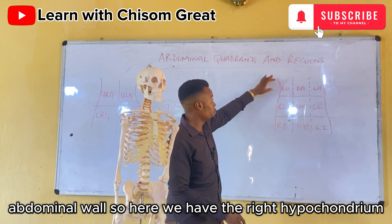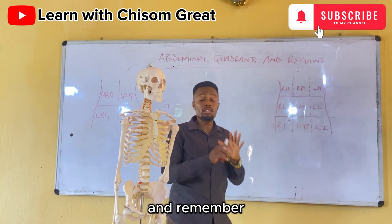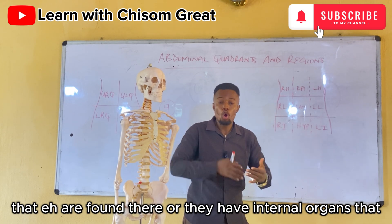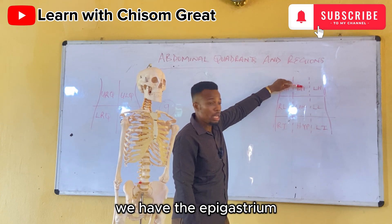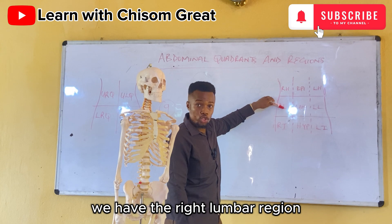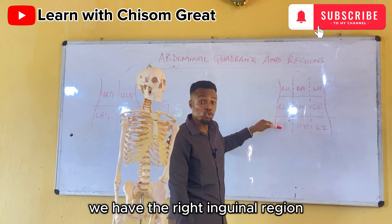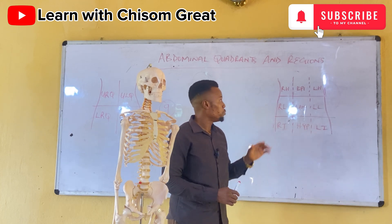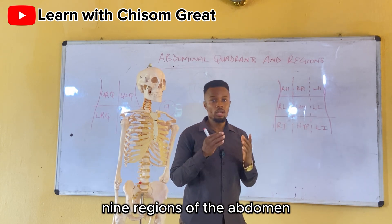The nine regions are: the right hypochondrium, the epigastrium, the left hypochondrium, the right lumbar region, the umbilical region, the left lumbar region, the right inguinal region, the hypogastrium, and the left inguinal region — making nine regions of the abdomen.